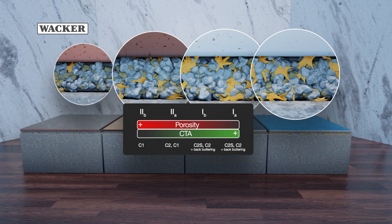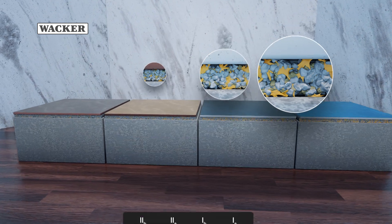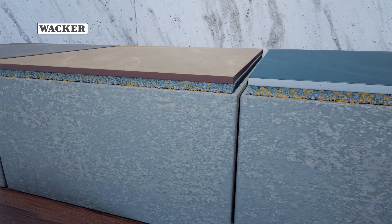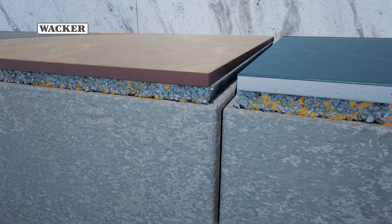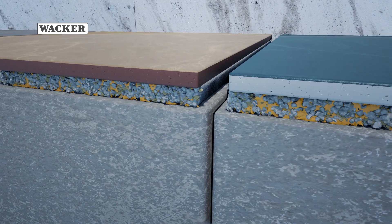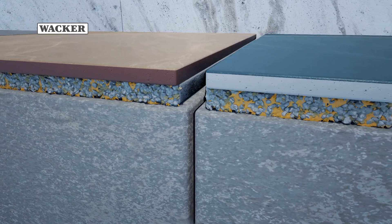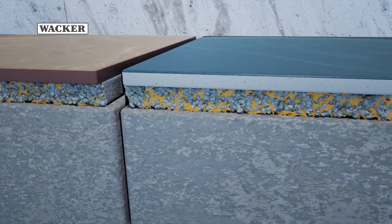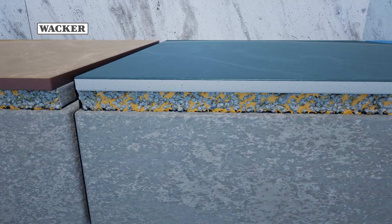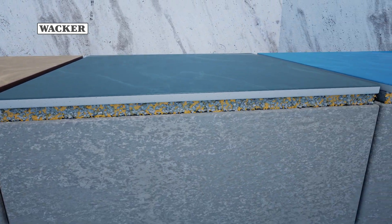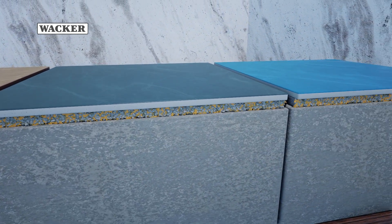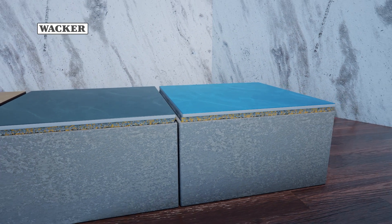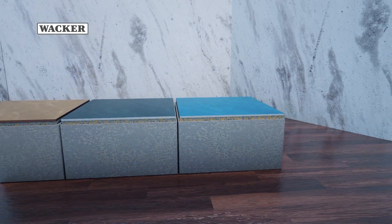A flexible tile adhesive can absorb mechanical stress between the tile and substrate caused by impact or movement, such as shrinkage of a concrete wall or floor. Consequently, the whole tile adhesive and substrate system remains intact, secure, and durable without detaching or cracking.